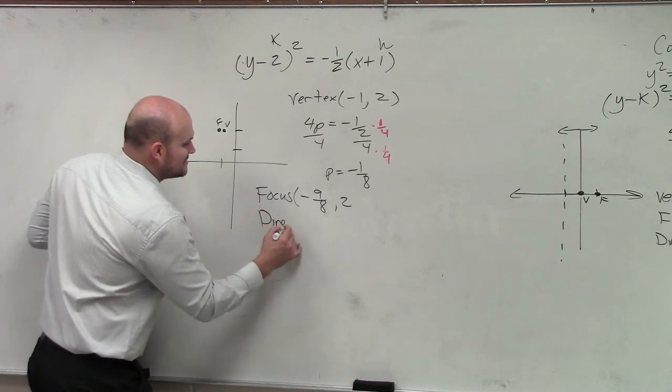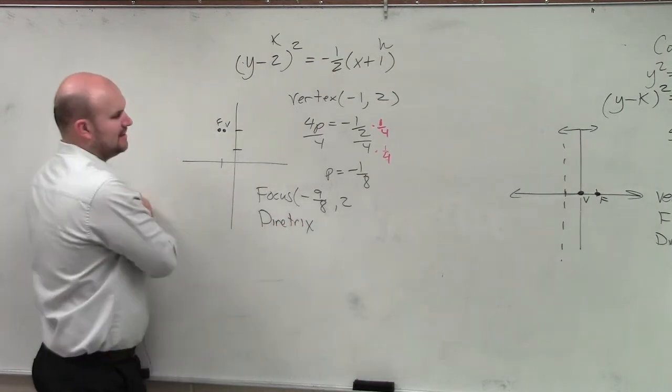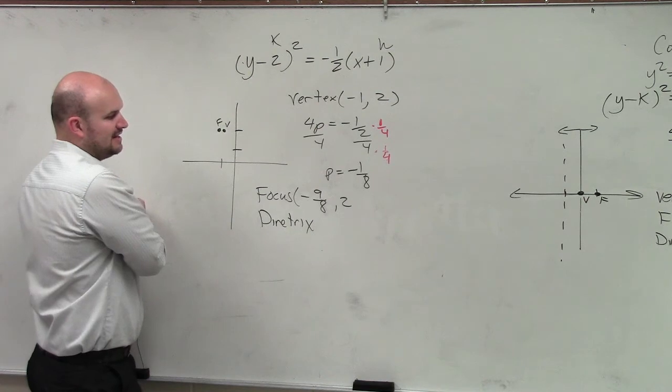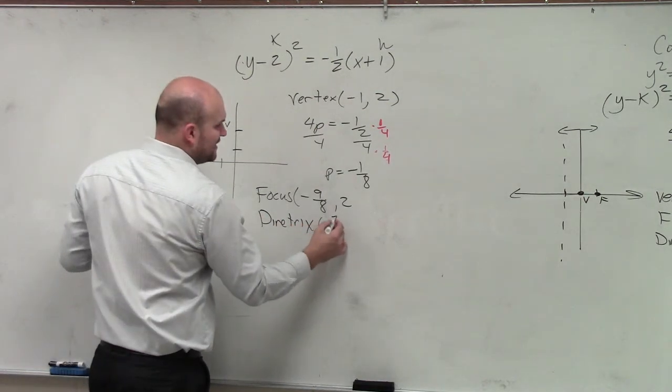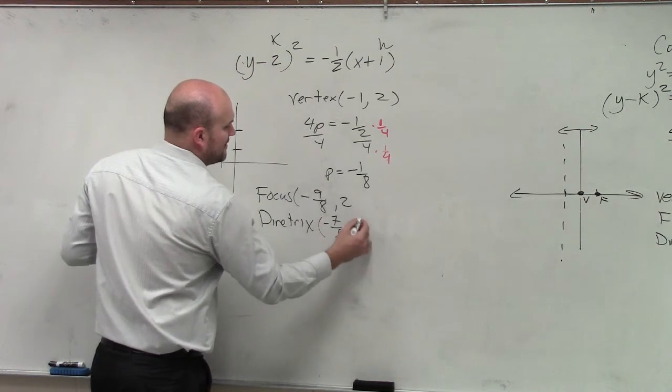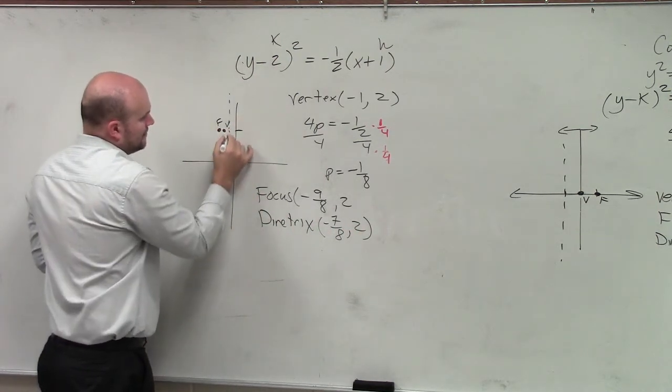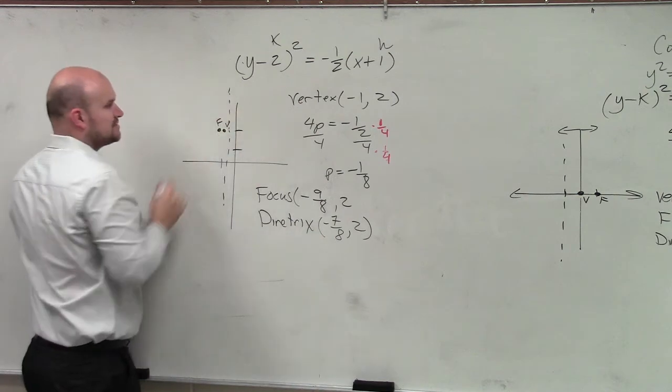And again, since I know that that is a vertical line, that's going to be at negative 7 8 comma 2. So that directrix looks like this.